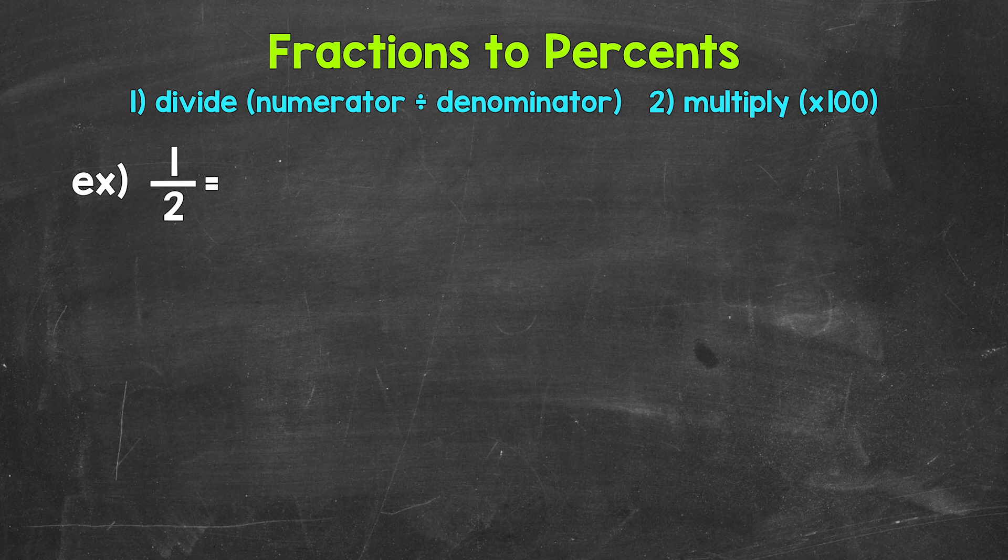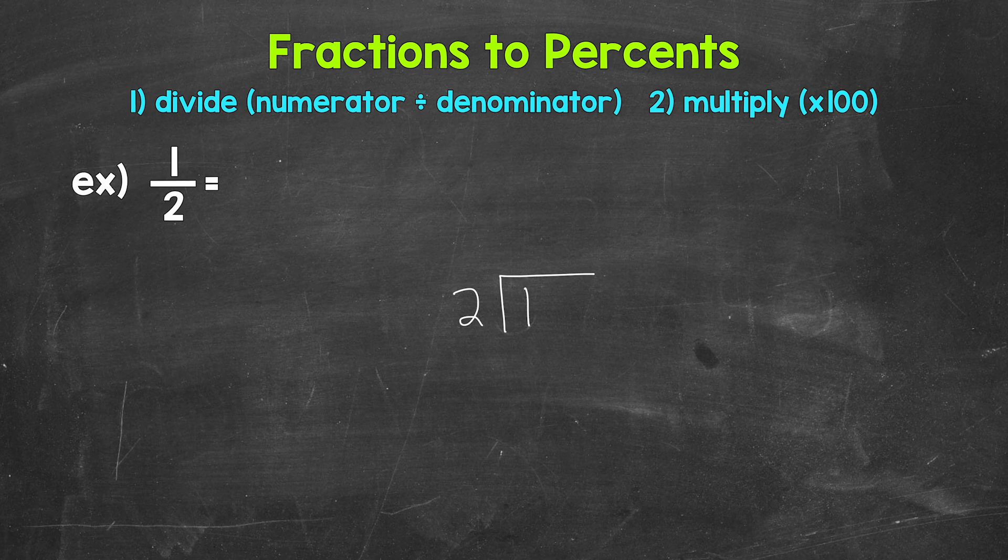So for 1 half, we can set this up as one divided by two. Then we go through the division process. So we have one divided by two. How many whole groups of two in one? How many twos in one? Well, we can't do that. So we need a decimal and a zero in order to work through this problem.